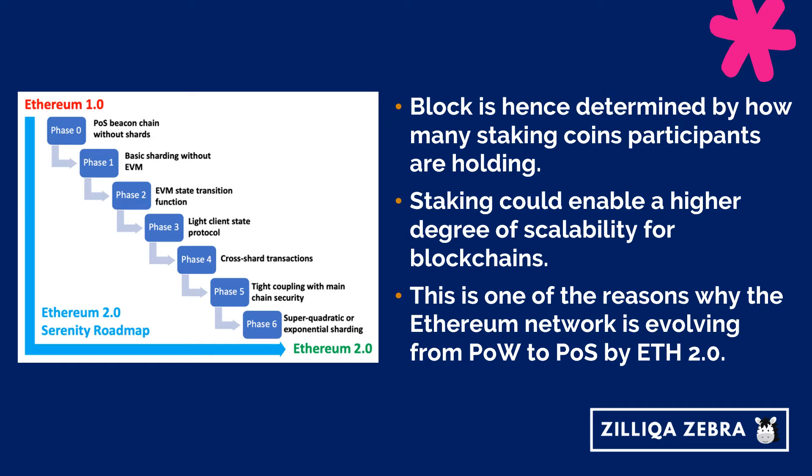In this way, what really determines which participants create a block isn't based on their ability to solve hash challenges as with Proof-of-Work — instead it's determined by how many staking coins they are holding. Some argue that block production through staking enables a higher degree of scalability. This is one of the reasons the Ethereum network is planned to migrate from POW to POS in a set of technical upgrades collectively referred to as ETH 2.0.